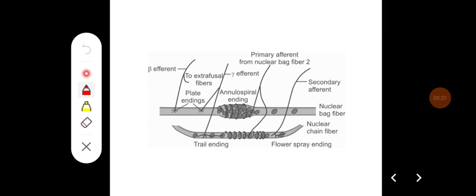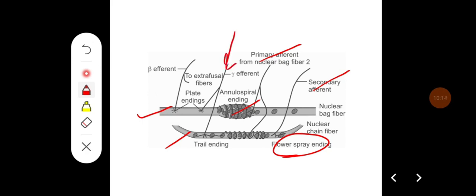This diagram shows the intrafusal fibers of the muscle spindle — the nuclear bag fibers with a dilated portion in the middle, and the nuclear chain fibers. Nuclear bag fibers receive both primary and secondary afferents. Primary afferents arise from annulospiral endings of both nuclear bag fibers and chain fibers, whereas secondary afferents arise from flower spray endings on the nuclear chain fibers. Regarding gamma innervation, gamma 1 innervates both nuclear chain fibers and bag fibers as plate endings, while gamma 2 innervates mainly the nuclear chain fibers as trail endings.